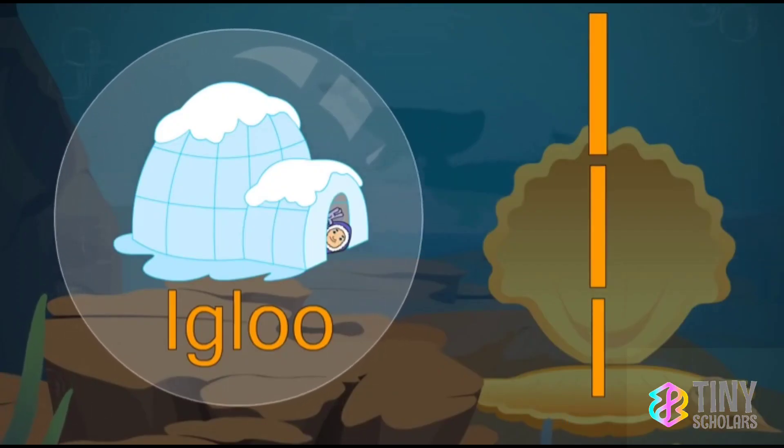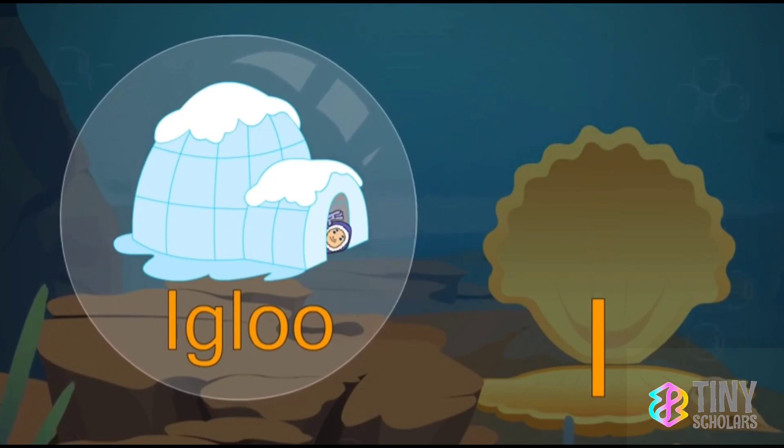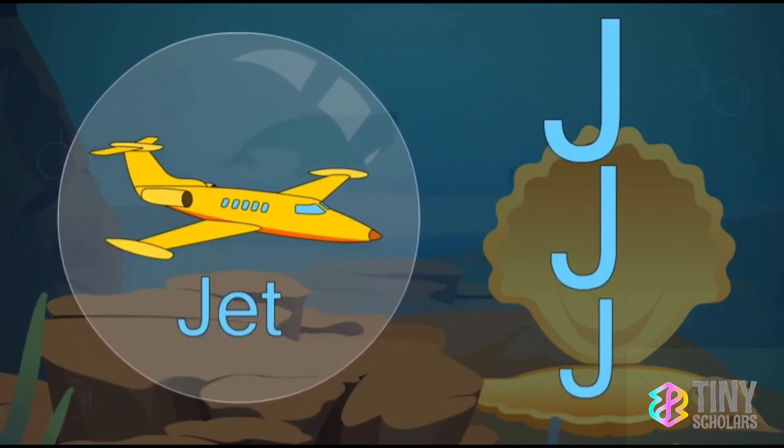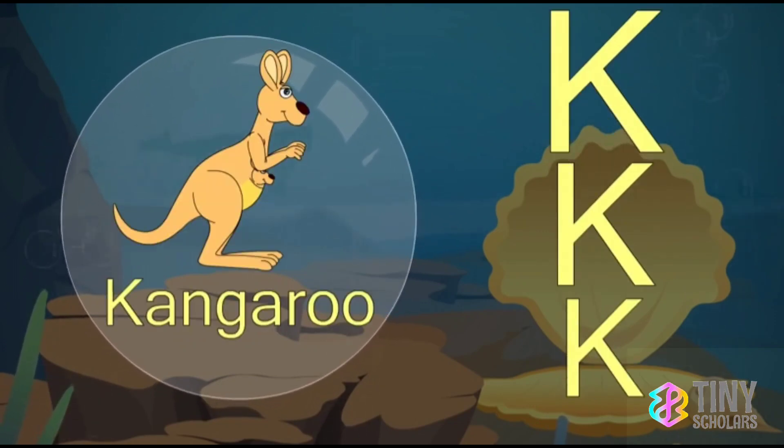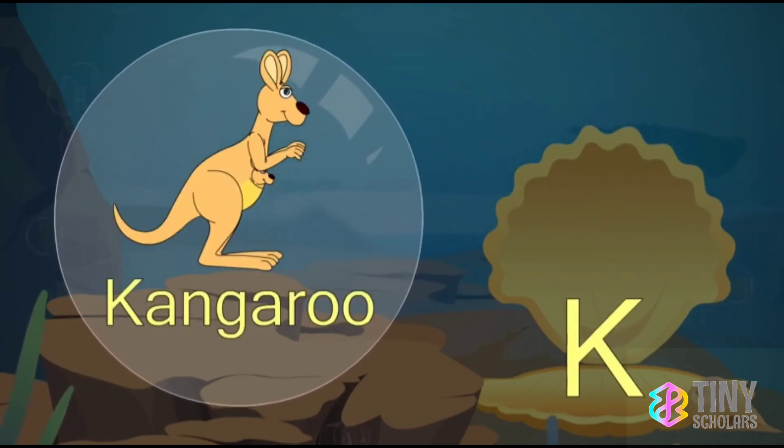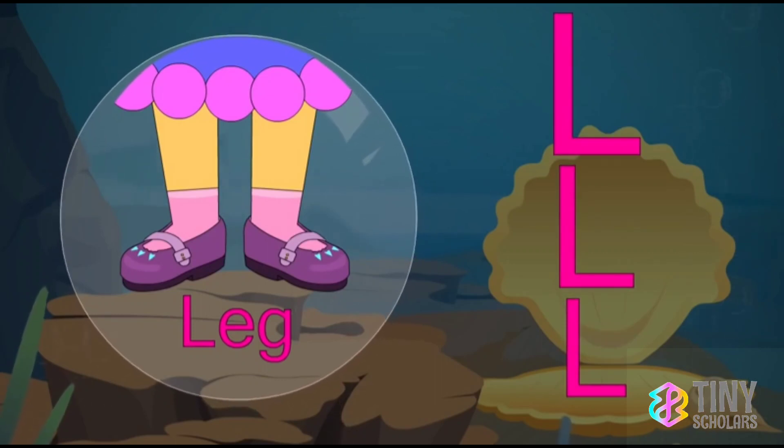I-I-I for igloo. J-J-J for jet. K-K-K for kangaroo. L-L-L for leg.